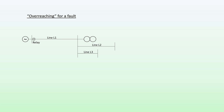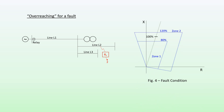Now let's look at what is meant by overreaching for a fault. We have the same network, and this time we have a fault located on line L2, a bit further out than where the Zone 2 reach would be — so this fault would be in the Zone 3 reach of the relay. Looking at the fault condition on the RX plane, we have Zone 1 and Zone 2 as before, and due to the fault the impedance trajectory moves and ends up within the Zone 1 characteristic.